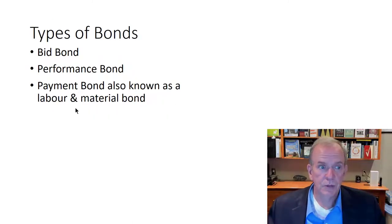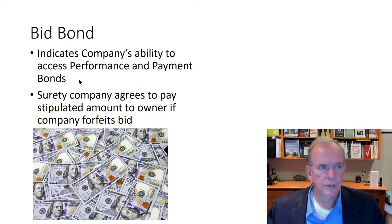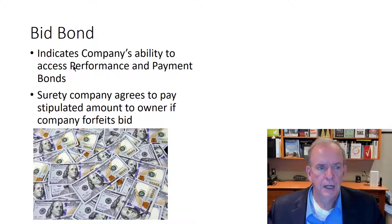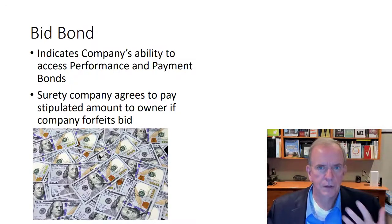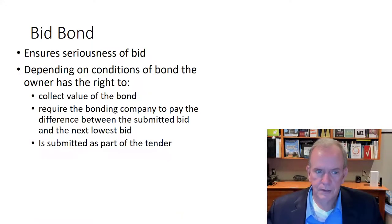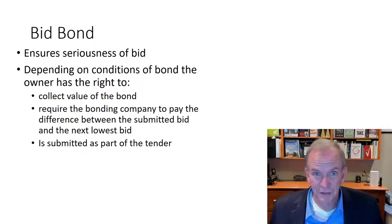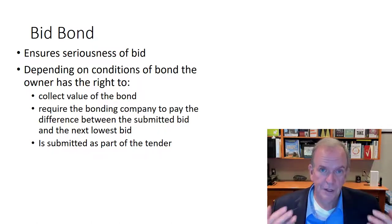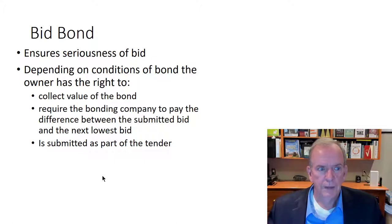There are actually three types of bonds. The bid bond indicates the company's ability to access performance and payment bonds — the surety company agrees to pay a stipulated amount to the owner if the company forfeits the bid. It ensures the seriousness of the bid so people aren't playing games. The owner has the right to collect the value of the bond or require the bonding company to pay the difference between submitted bids. It's submitted as part of the bidding process — what some people my age still call the tendering process.